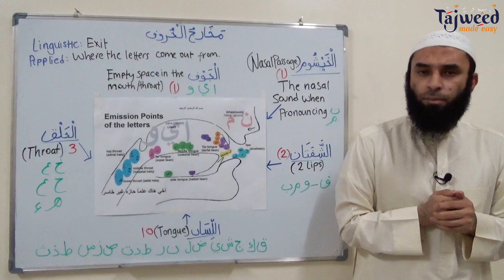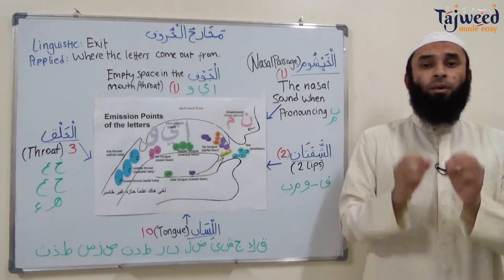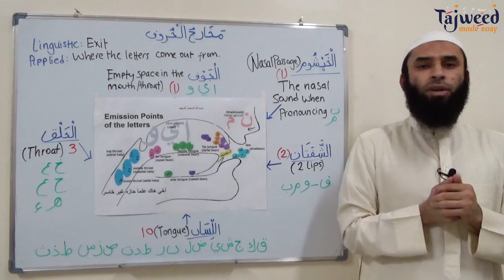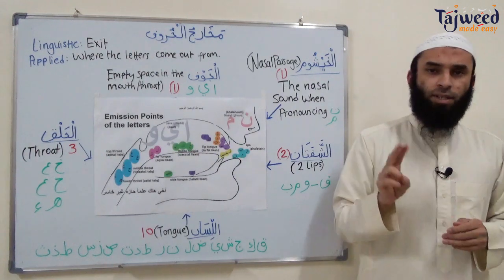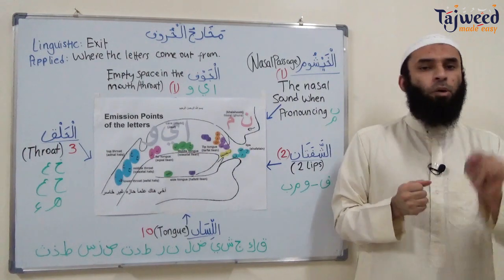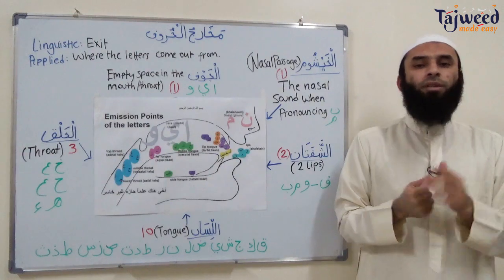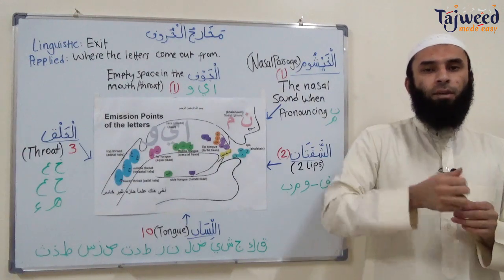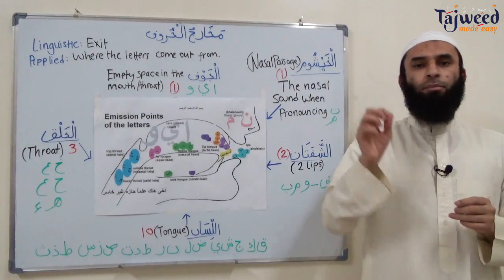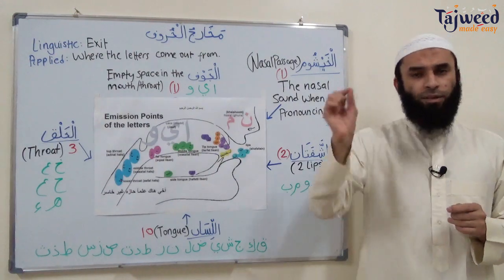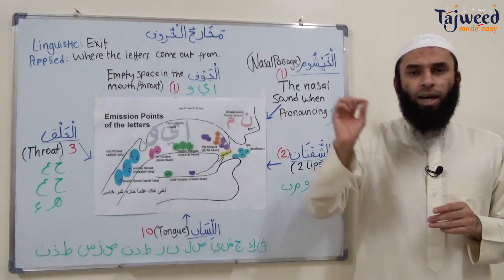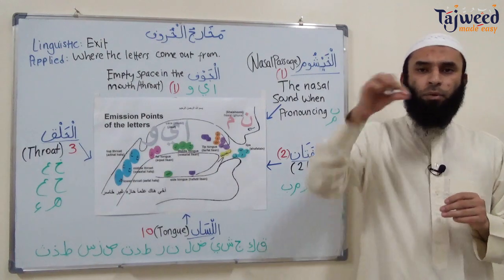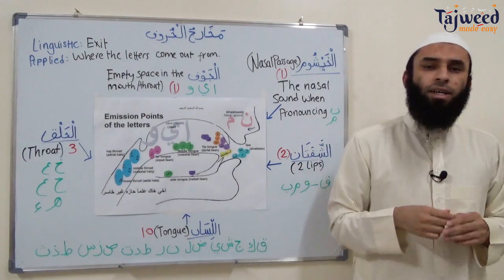There are 28 letters in the Arabic language. Now, how to pinpoint a مَخْرَج of a letter? There are two ways. Number one, put a سُكُون on that letter and previous to that put a هَمْزَة with فَتْحَة, كَسْرَة, or ضَمَّة. So A, E, O — then put a سُكُون on that letter.